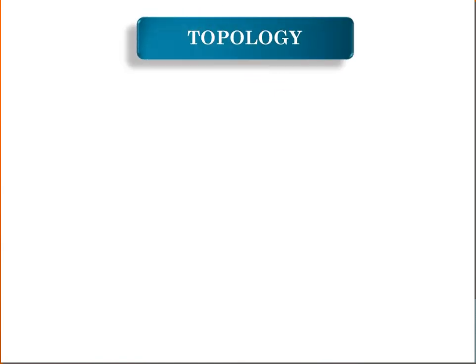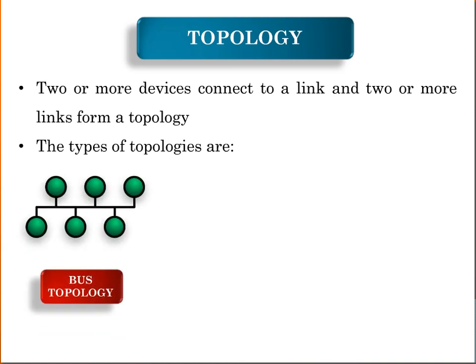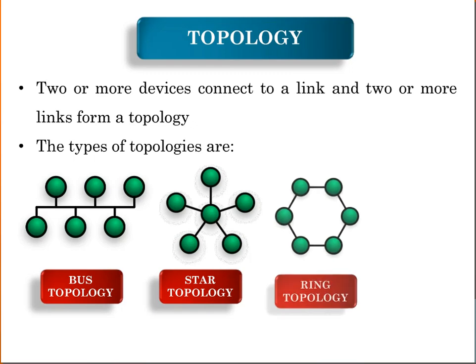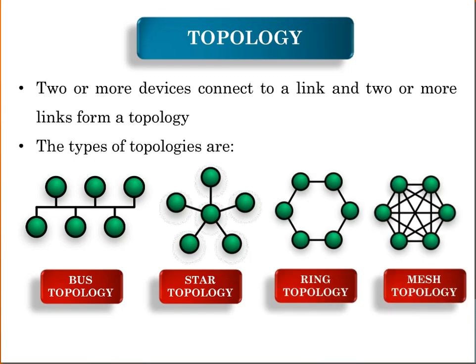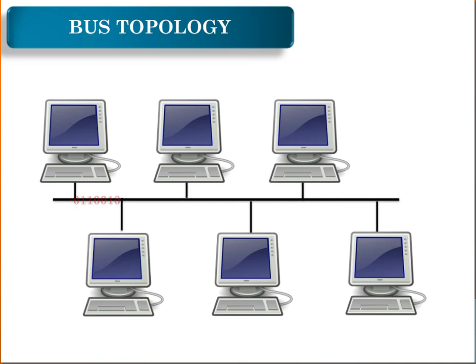Now let's see how to connect two or more devices. Two or more devices connect to a link, and two or more links form a topology. The types of topologies are Bus topology, Star topology, Ring topology, and Mesh topology. Let's see each one in detail. Bus topology — a bus topology is a type of network setup where each computer and network device is connected to a single cable or backbone.